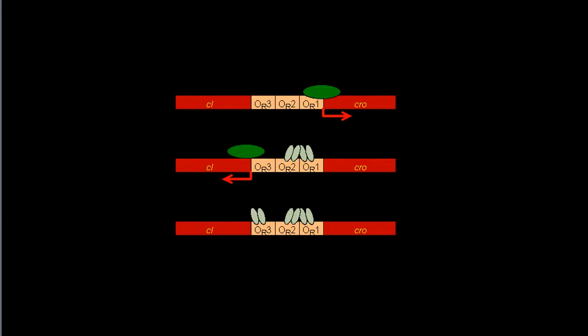The life cycle of lambda phages is controlled by the CI and CRO proteins. The lambda phage will remain in the lysogenic state if the CI protein predominates, but will be transformed into the lytic cycle if the CRO proteins dominate.